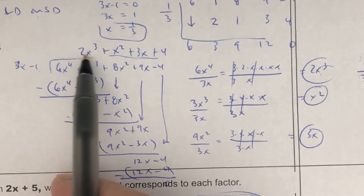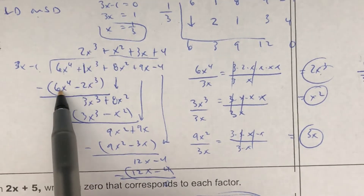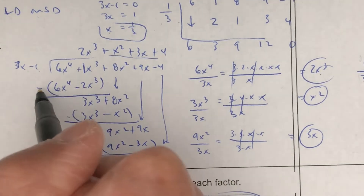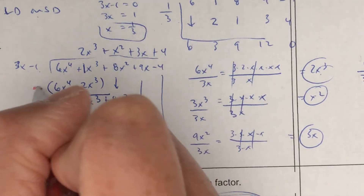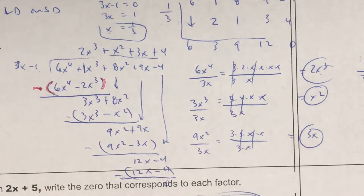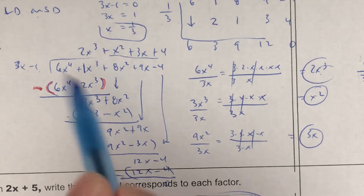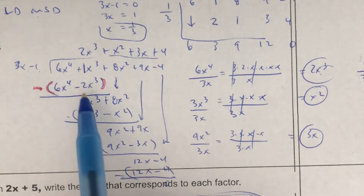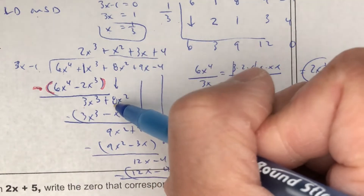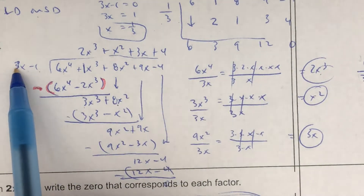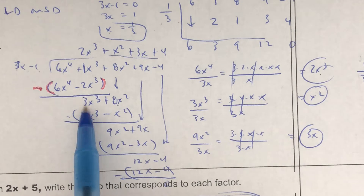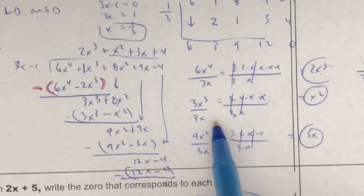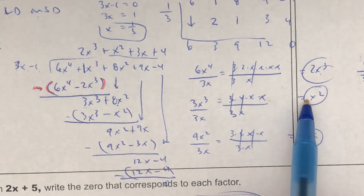Then I'm going to multiply. 2x to the third times 3x gives you 6x to the fourth. This gives you negative 2x to the third. And then we need to subtract — I'm subtracting the coefficients. 6 minus 6 is 0. 1 minus negative 2 is 3. Bring this down to an 8. I'm going to divide: 3x goes into 3x cubed. Dividing 3x cubed by 3x — these cancel and you're left with x squared.